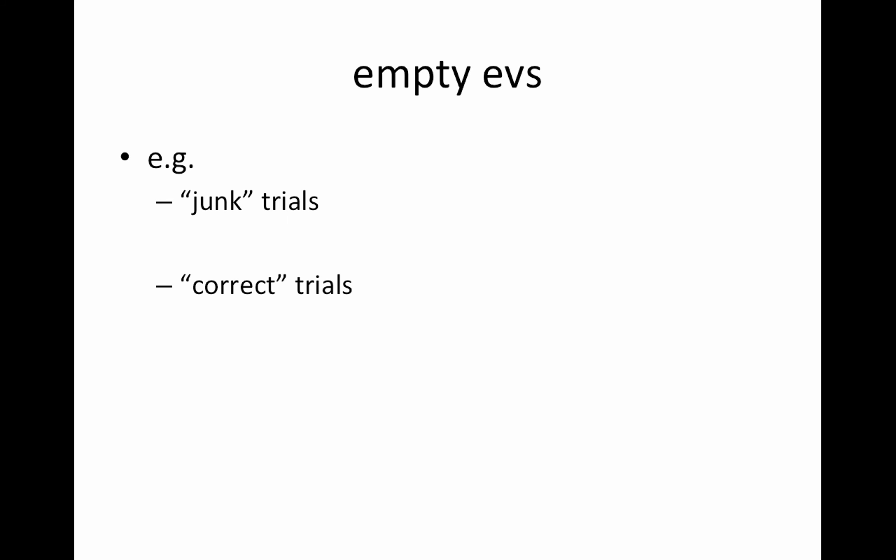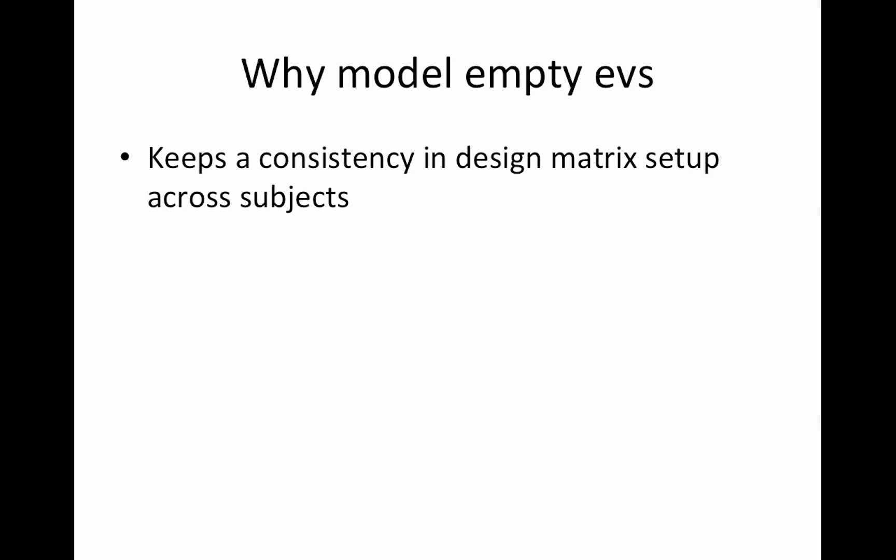With correct trials, you might have a subject that didn't have any correct trials. If you don't have a regressor for correct trials, all of your regressor numbers are going to be off by one for that subject and you'd have to adjust everything. So coding-wise, it's easier to just put in a placeholder if that run or that subject didn't have any of that type of stimulus. That's what it's for — it keeps consistency in your design matrix setup across subjects.